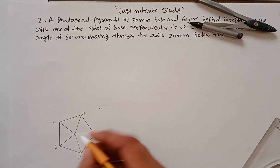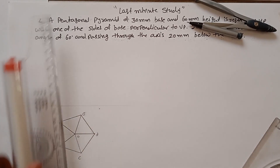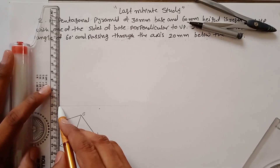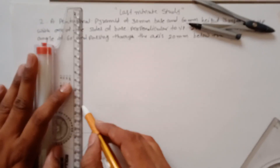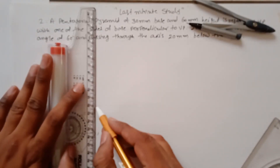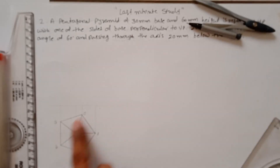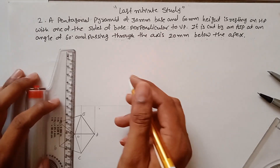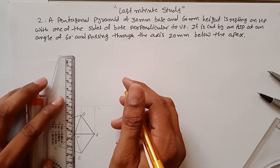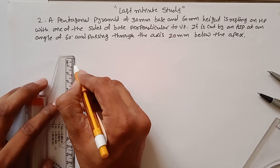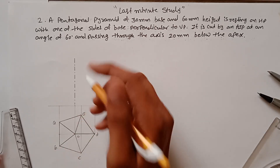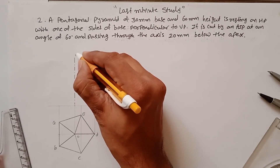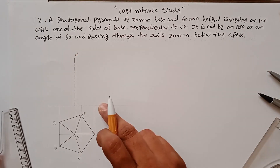The front view of the pyramid will be a triangle, so you have to project your lines here. You need the center point as well for the axis. E and C are given, and the height is 60 mm, so you need to construct a 60 mm height. This is the axis, which should be drawn using a chain line. This point is your O point, the apex point — we can call it O dash.